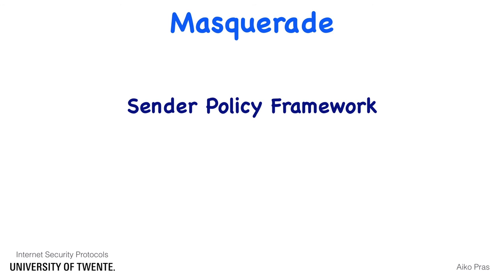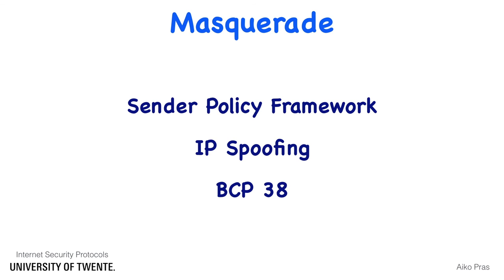Such an attack is called IP spoofing. Internet service providers often try to protect against such attacks by filtering packets with invalid source addresses, a process that is described in BCP 38.